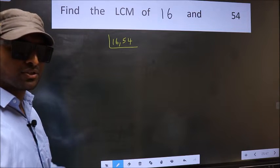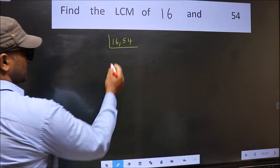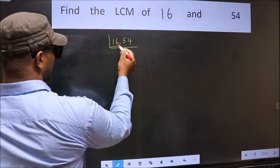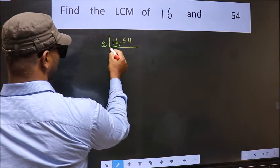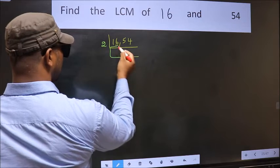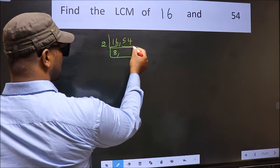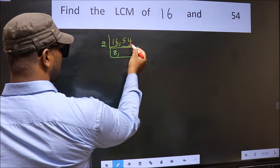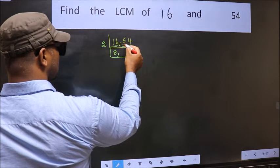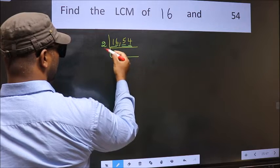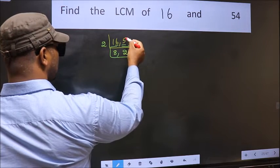Now you should focus on the first number which is 16. The last digit is 6, so take 2. When do we get 16 in the 2 table? 2, 8, 16. The other number 54 — last digit 4 — so this is also divisible by 2. A number close to 5 in the 2 table is 2, 2 is 4.